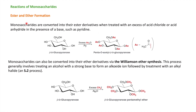The first reaction is ester and ether formation. When you treat beta-D-glucopyranose with acetic anhydride in the presence of a base, all hydroxyl groups will get acetylated, and you can get penta-O-acetyl-beta-D-glucopyranose. In place of acetic anhydride, you can use various acyl chlorides for acylation or acetylation.